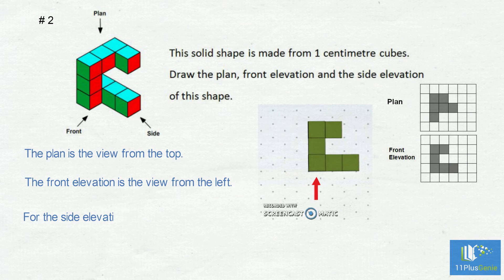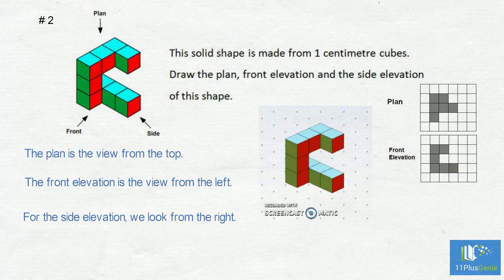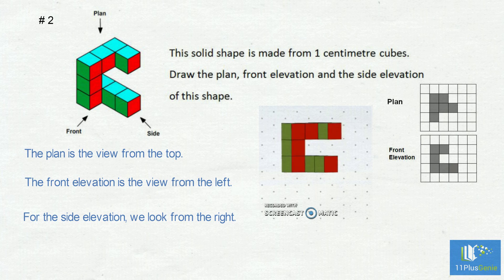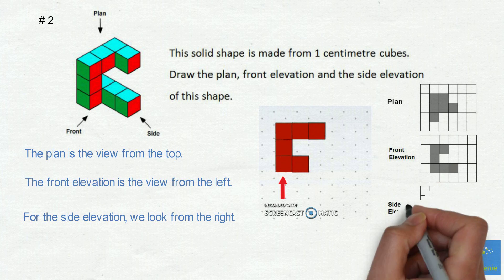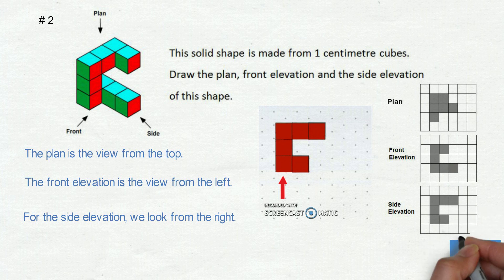For the side elevation, we look at the shape from the right. From left to right there are three blocks on top of each other, then two blocks with a gap between them, and then one block in the top row. The side elevation looks like this.